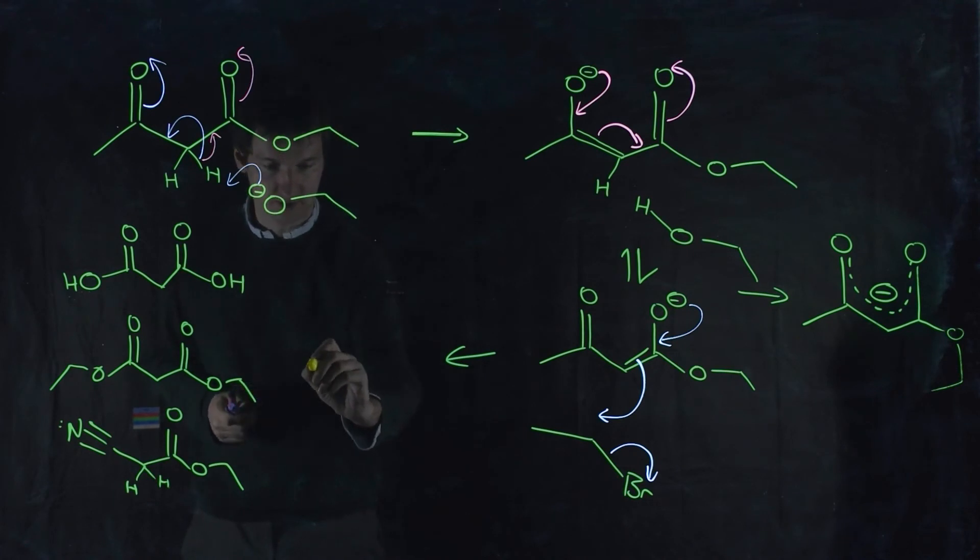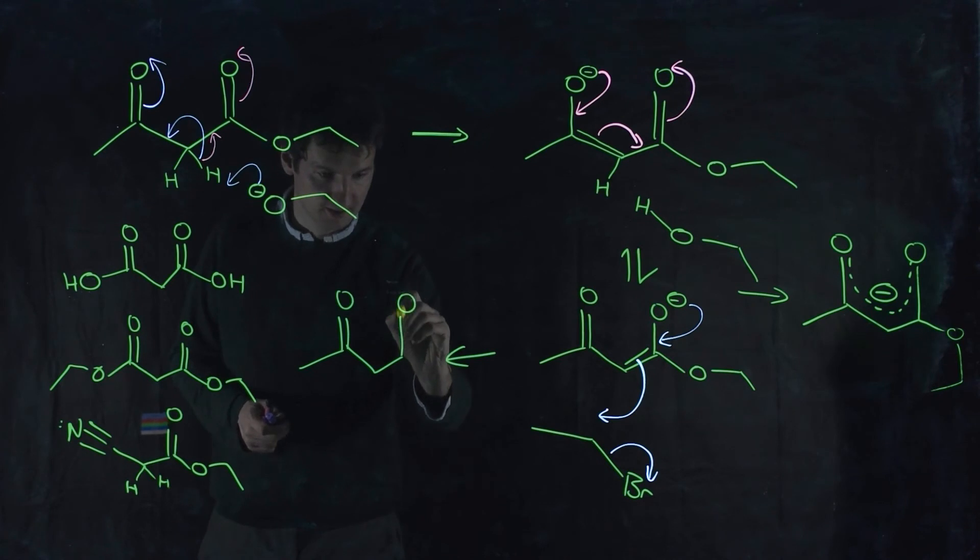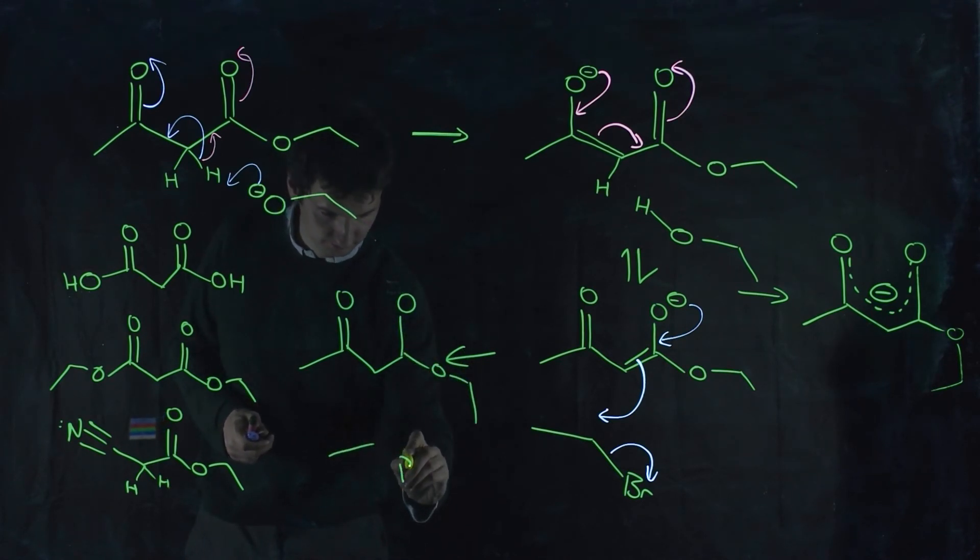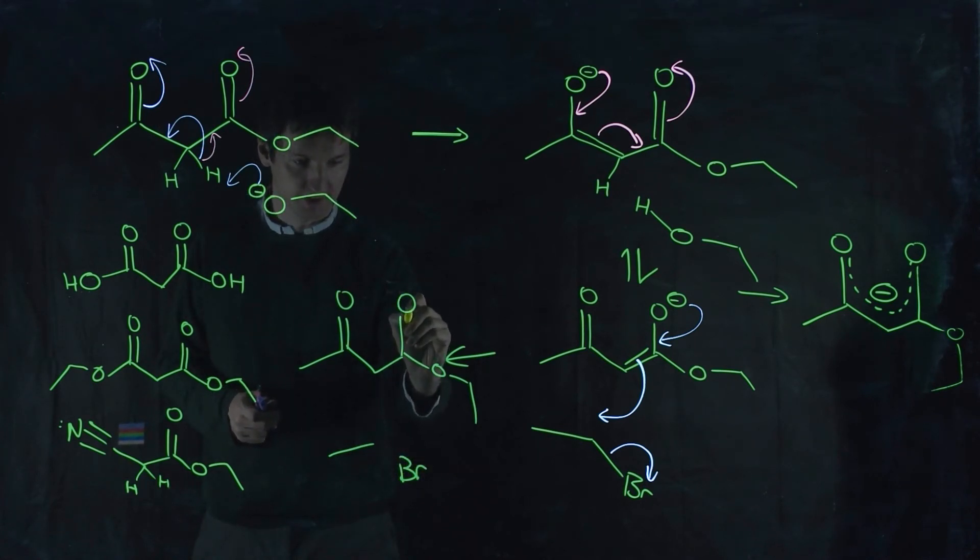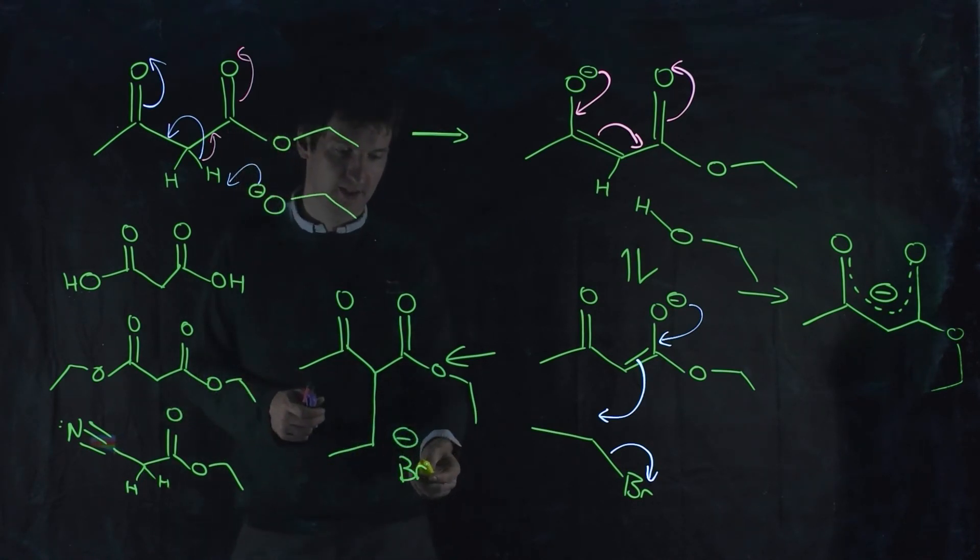And what's our product going to look like? Well, our product is going to look like exactly what you'd expect by following the rules. So, here are all the things that were there. Took that pair of electrons, made a new carbon-oxygen double bond. Took that pair of electrons, made a new carbon bond. Took that pair of electrons, and it's now on the bromine. You've got bromide. So, all we've done is alkylated this position in the middle.